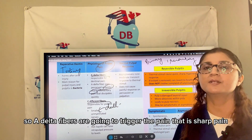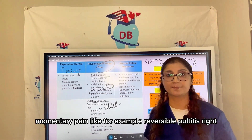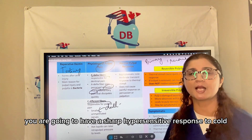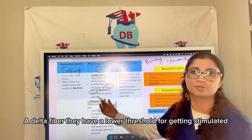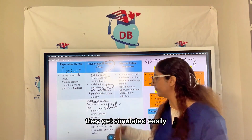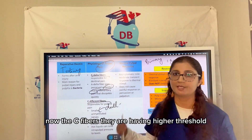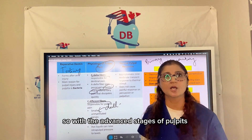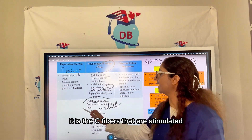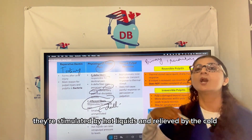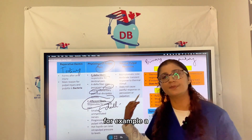A-delta fibers trigger sharp, momentary pain — for example, in reversible pulpitis you have a sharp hypersensitive response to cold or sweet stimuli. A-delta fibers have a lower threshold and get stimulated easily. C fibers have a higher threshold, so they are stimulated in advanced stages of pulpitis or the primary stage of pulpal necrosis.